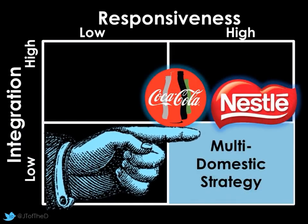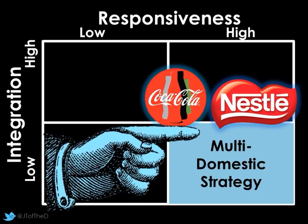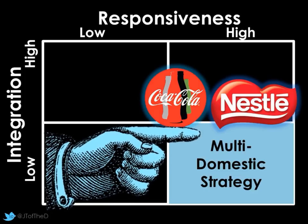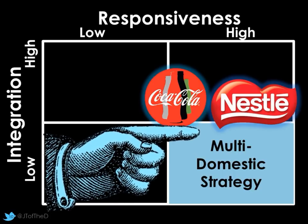The third approach is the multi-domestic strategy. This is where firms have a low level of integration — their various subsidiaries are quite decentralised — however, they're highly responsive to the local market. One of the best companies that exemplifies this is Nestlé, which has very unique products in different countries. If you travel abroad and go into a supermarket, some products you may not recognise, but look closer and you may find they're produced by Nestlé. And Coca-Cola, only this week, announced they're going to produce their first ever alcoholic beverage in Japan, using Japanese alcohol — a really specialised product for that local market.